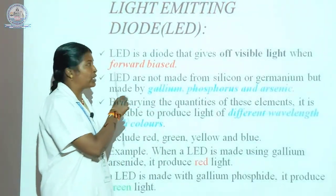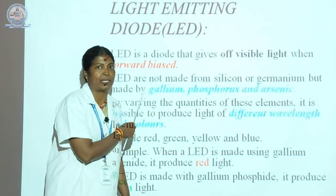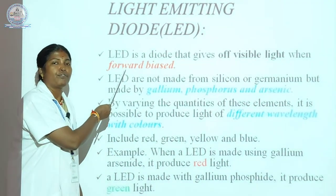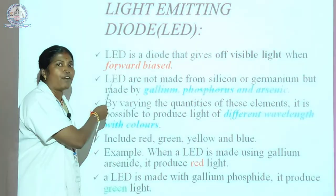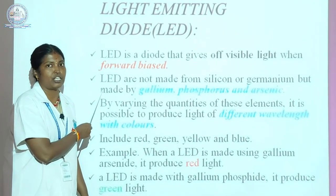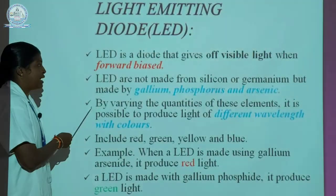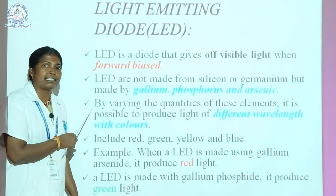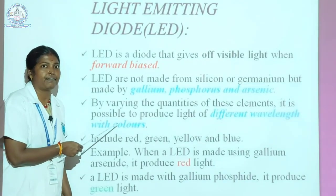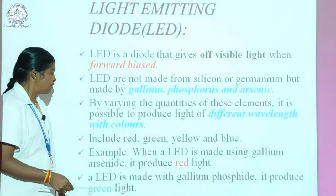Next, we discuss the Light Emitting Diode, that is LED. It is one type of special diode. The LED is a diode that gives off visible light when it is forward biased. The LED is not made from silicon or germanium, but is made up of gallium, arsenic, and phosphorus. By varying the quantities of these elements, it is possible to produce light of different wavelengths with colors like green, yellow, red, and blue.